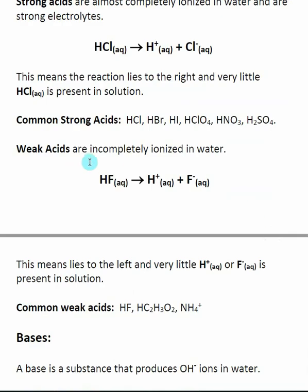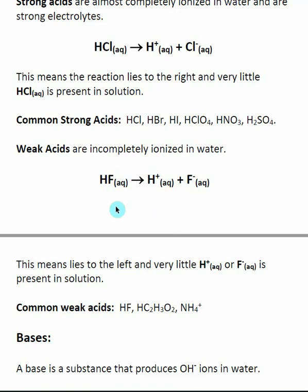A weak acid, on the other hand, incompletely ionizes in water. HF is a weak acid — when I put it into water, very little of it dissociates. By saying that it is weak, it means that this reaction lies very far to the left. When we say weak, what we really mean is that there is very little H⁺ or F⁻ present in solution. If I put HF into solution, only small amounts of H⁺ and F⁻ will be present, and most of the HF will remain as HF in solution. This idea of complete ionization for strong acids versus incomplete ionization for weak acids is going to be very important when we start doing chemistry with them.